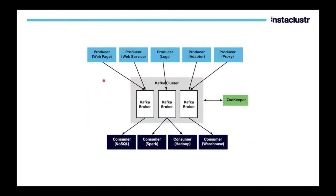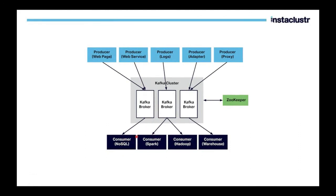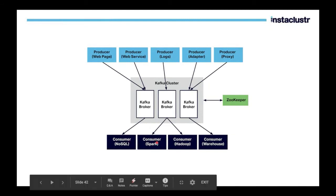There can be multiple producers for multiple topics — for example, web services producing to different topics like logs, adapter, and proxy. Consumers could be other systems such as NoSQL databases, Spark, Hadoop, or data warehouses.